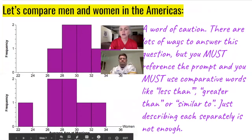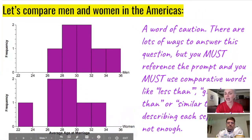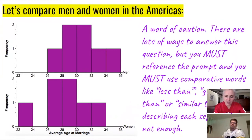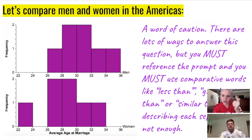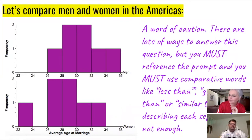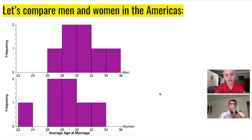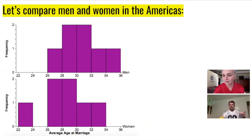We also want to be able to compare two data sets. A word of caution: compare does not mean just state. It doesn't mean CUSS the first graph, CUSS the second graph, and you're done. It means you need to use comparative words like 'less than,' 'greater than,' or 'similar to.' For example: the median of the men appears to be greater than the median of the women. That's the comparison we're looking for.